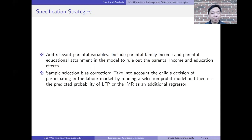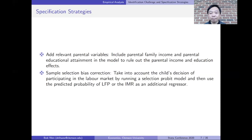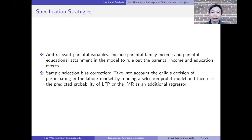I come up with two specification strategies. First, I include parental family income and parental educational attainment in the model as control variables to rule out the parental income and education effects. Second, I take into account the child's labor force participation choice by running a selection probit model first, and then use the inverse Mills ratio as an additional regressor in the child's earnings equation.